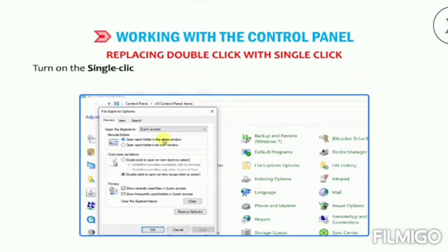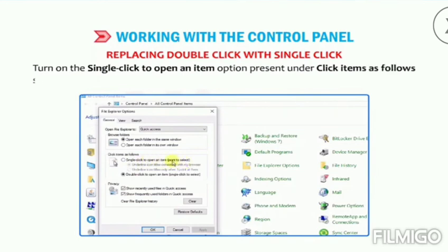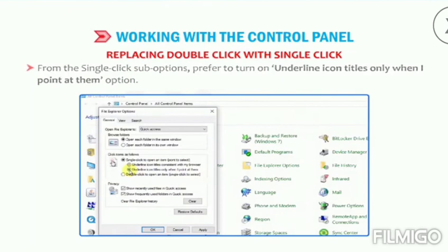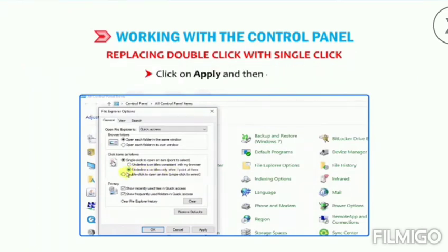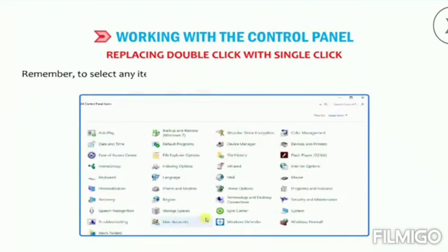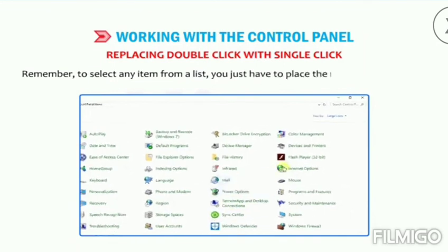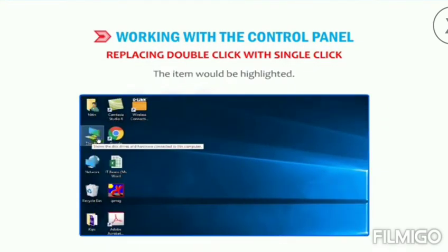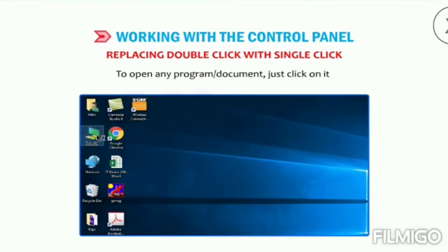Turn on the 'Single-click to open an item' option present under the 'Click items as follows' section. From the single-click sub-options, prefer to turn on 'Underline icon titles only when I point at them' option. Click on Apply and then click OK. Enjoy the experience of working with single-click now. Remember: to select any item from a list you just have to place the mouse pointer there — the item would be highlighted. To open any program or document, just click on it.